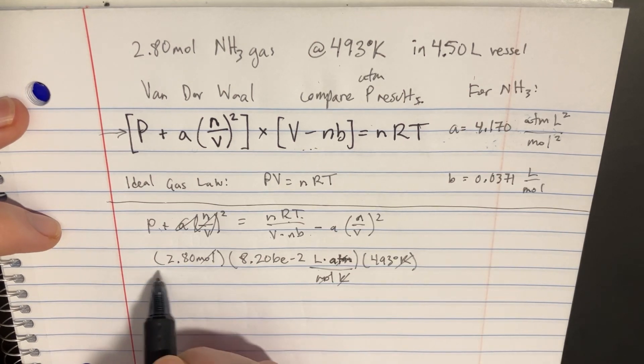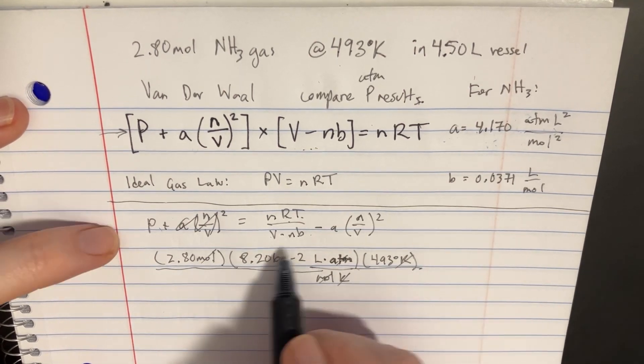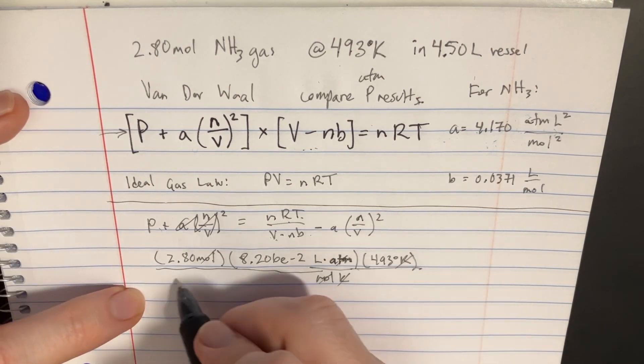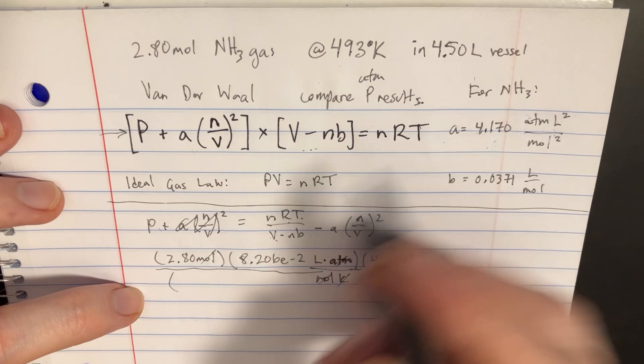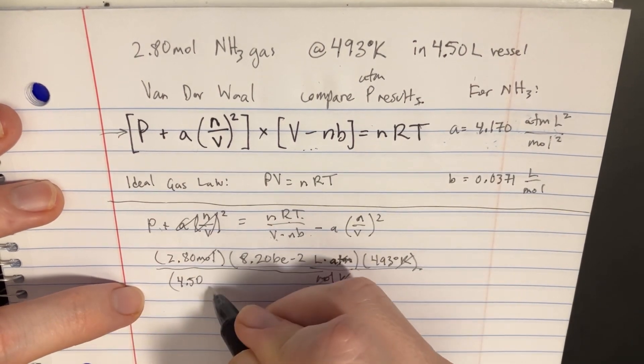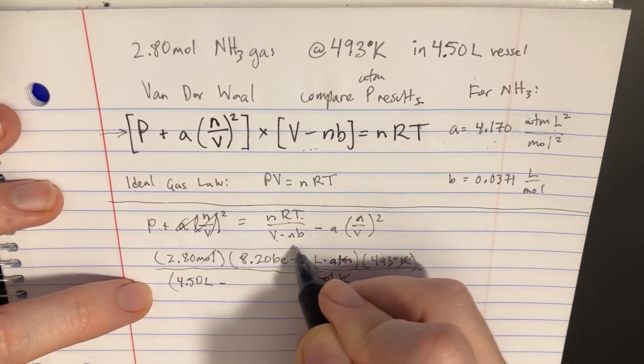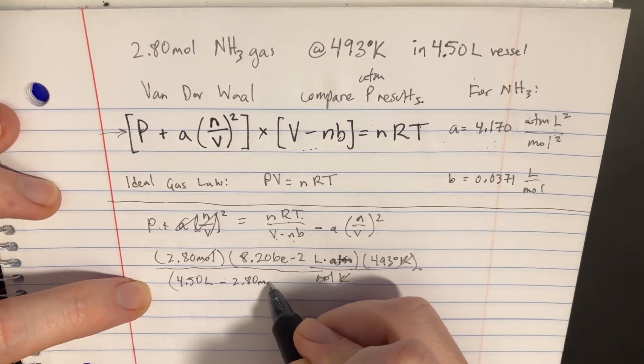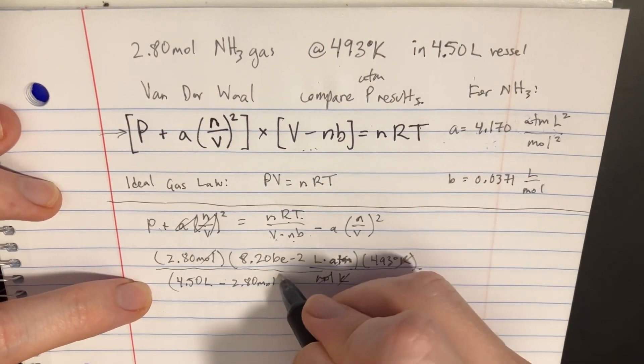Now let's go and finish this with the bottom side. So we're going to put V minus nB. We're just going to start with the volume, that's going to be 4.50 liters minus the n, which is going to be again 2.8 moles.